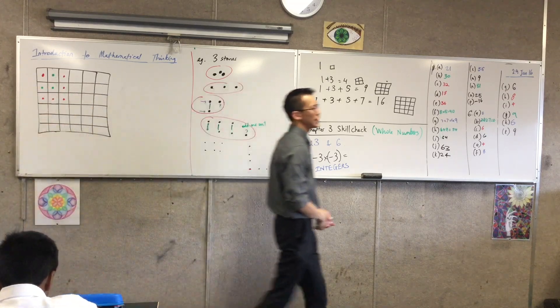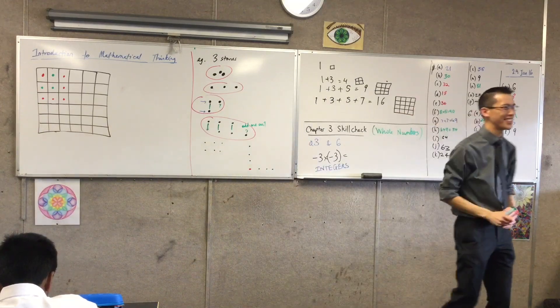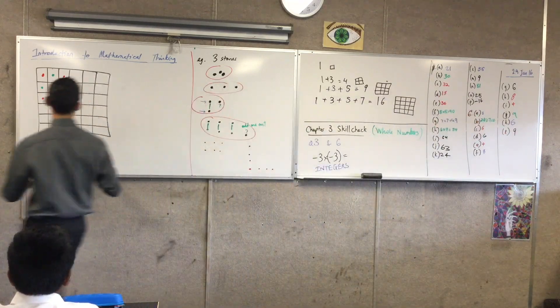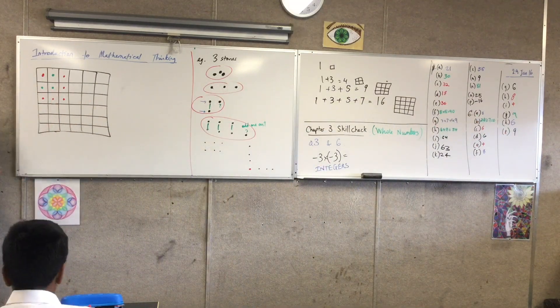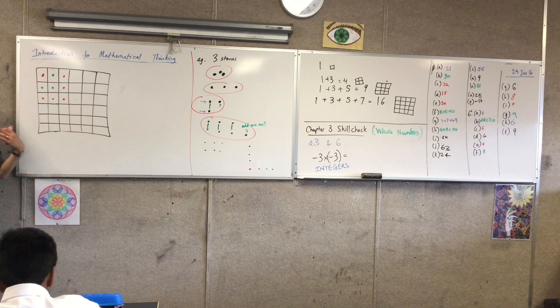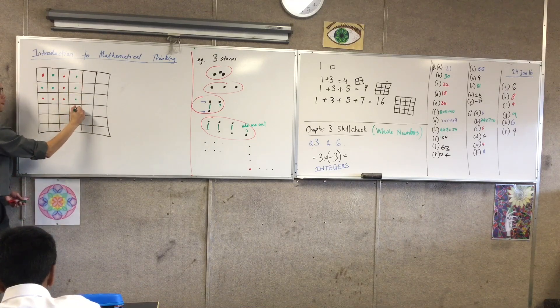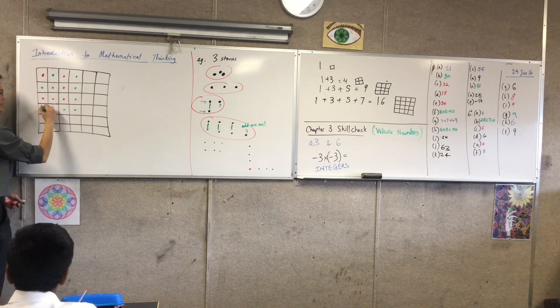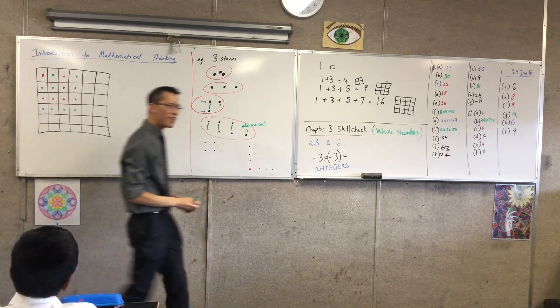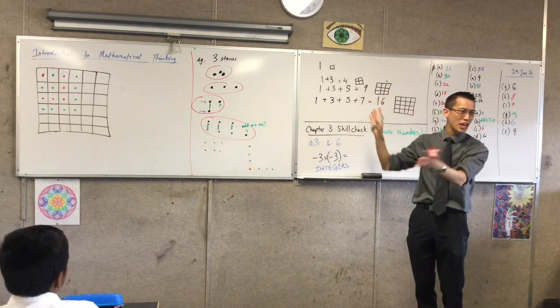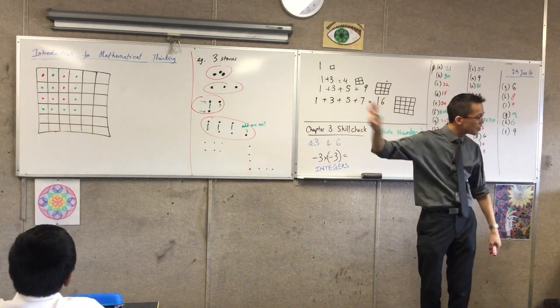So you see, this idea of mathematical thinking is to say nothing's a coincidence. There's always something going on here. I can keep going. I can say the next one, this is the last one that you were there. When I add on seven: one, two, three, four, five, six, seven. You see, the odd numbers have their own kind of beauty, their own kind of shape to them.